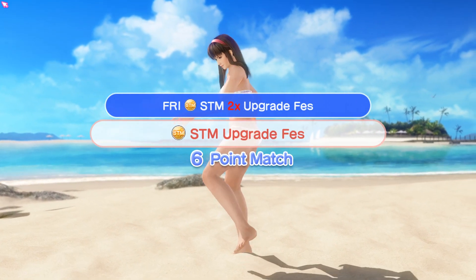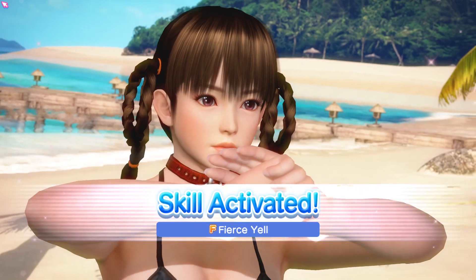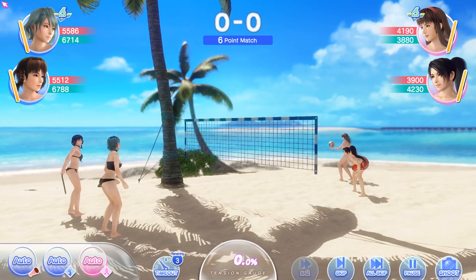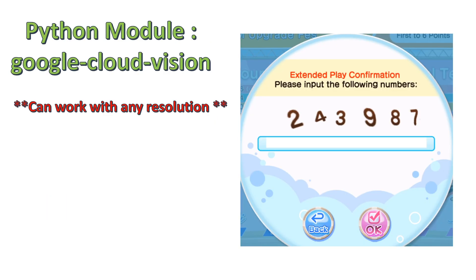This video will demonstrate how to make a simple robot to automate the gameplay and automatically fill the password. The Python module I use to detect the static picture is Image Search. Please note that the Image Search module is resolution sensitive and requires a different image for a different resolution. For the running irregular text, I use Google Cloud Vision API, which is able to work with any resolution.